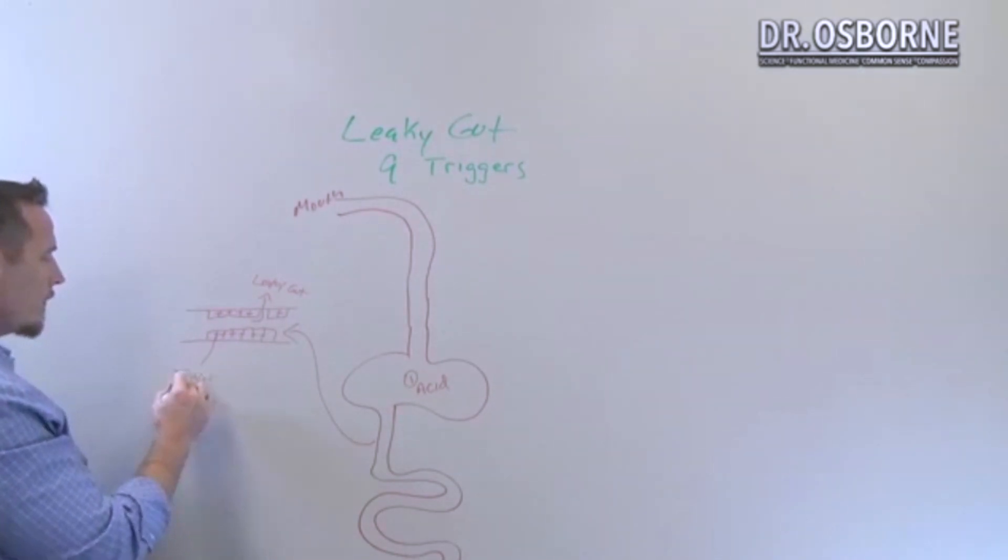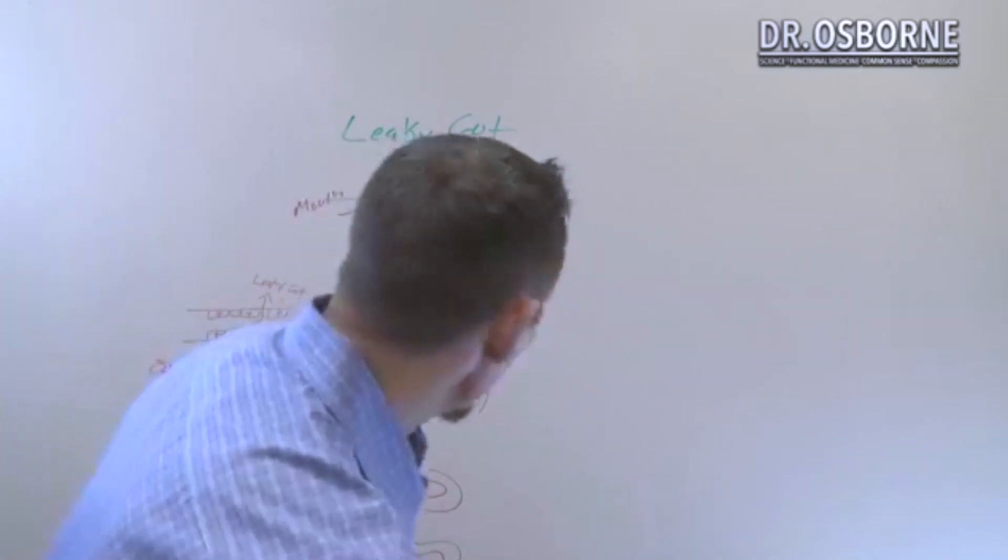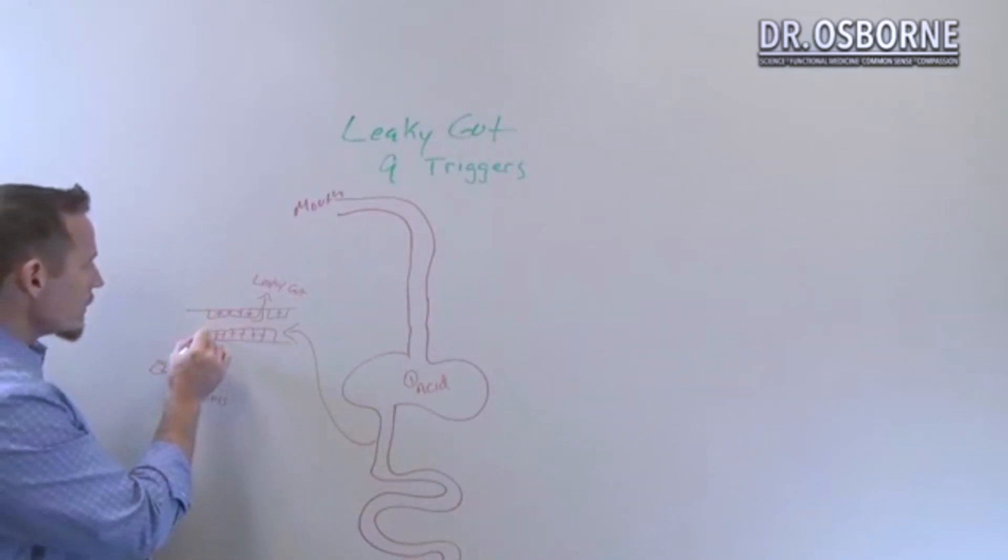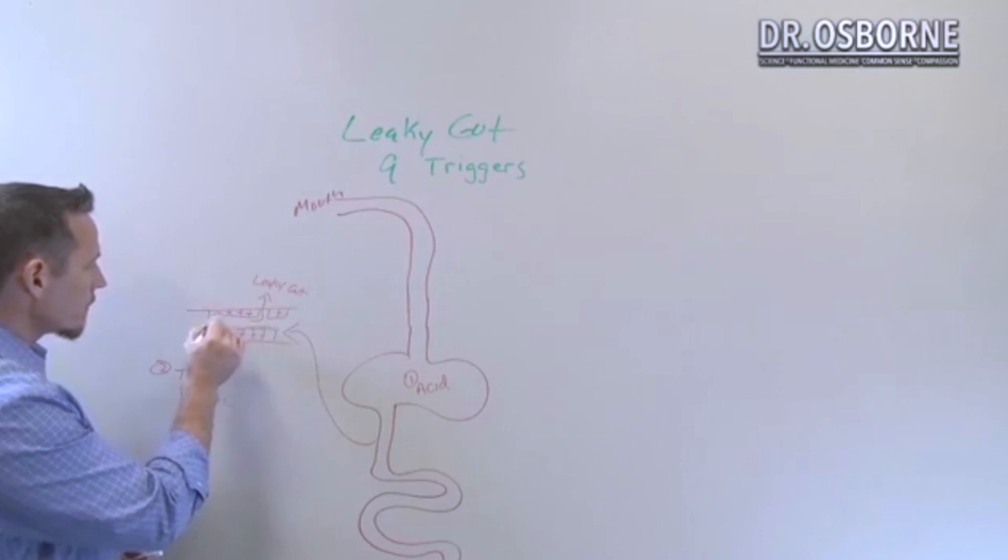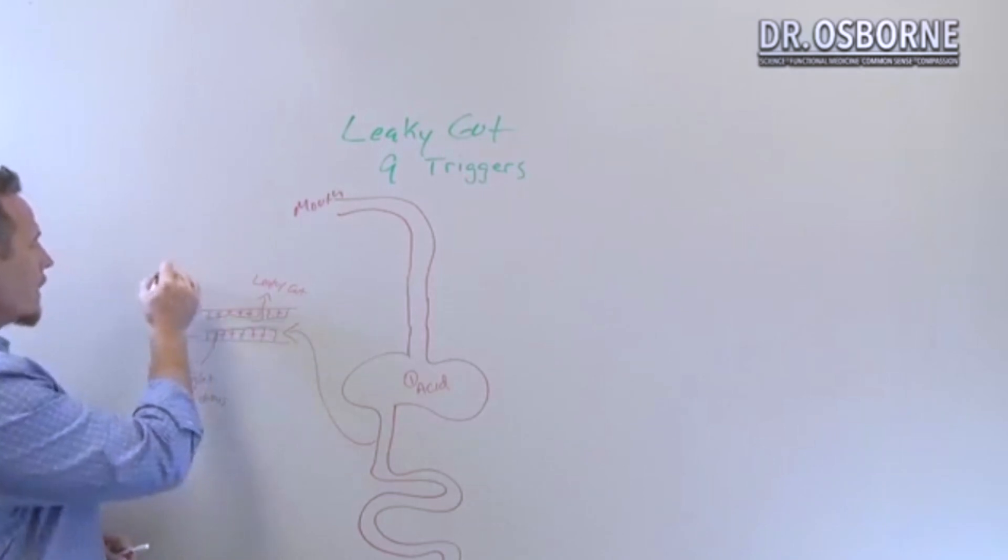Now in addition to that, we've got within the GI tract a layer of snot - and that sounds kind of gross, but that's what it is - it's a layer of mucus on the surface of our GI cells. That mucus serves as a physical barrier, and inside that mucus you make a protein, an antibody called secretory immunoglobulin A.